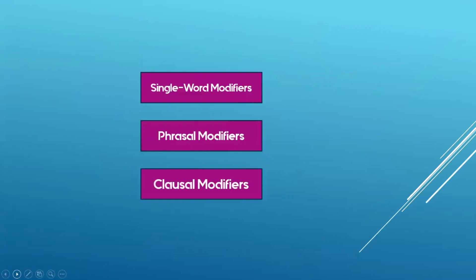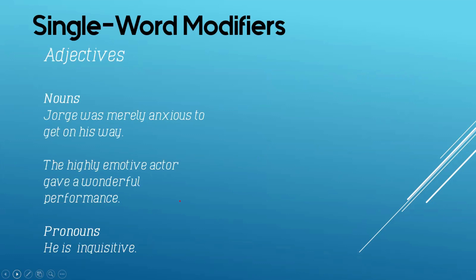Now, we all know that there are different types of modifiers. When we say modifiers, these are describing words. This could be single word modifiers, or one word, phrasal modifiers, and of course, clausal modifiers. These are the three different types of modifiers.